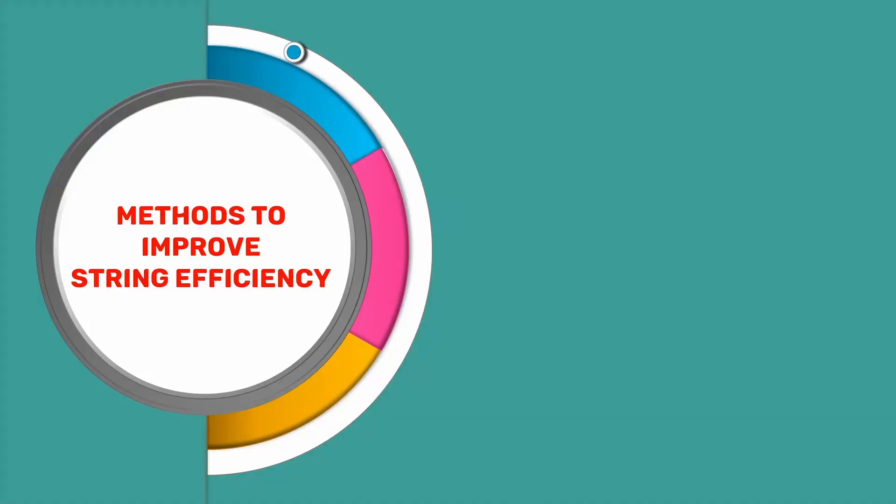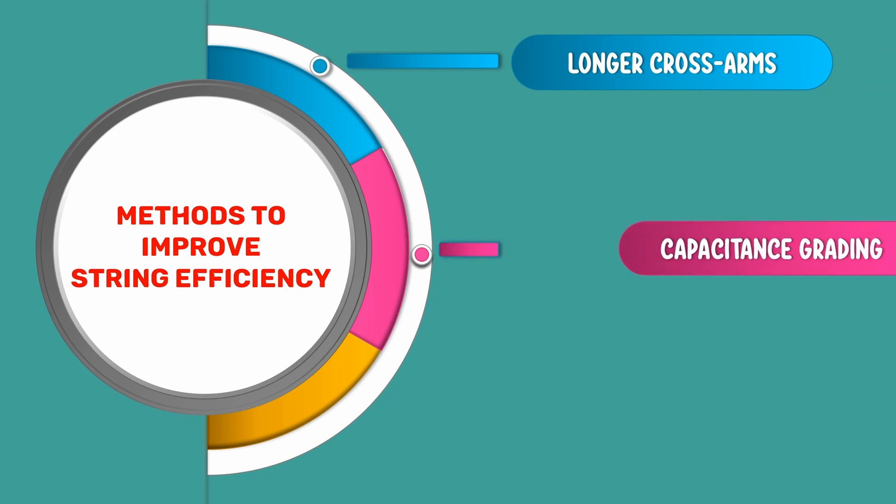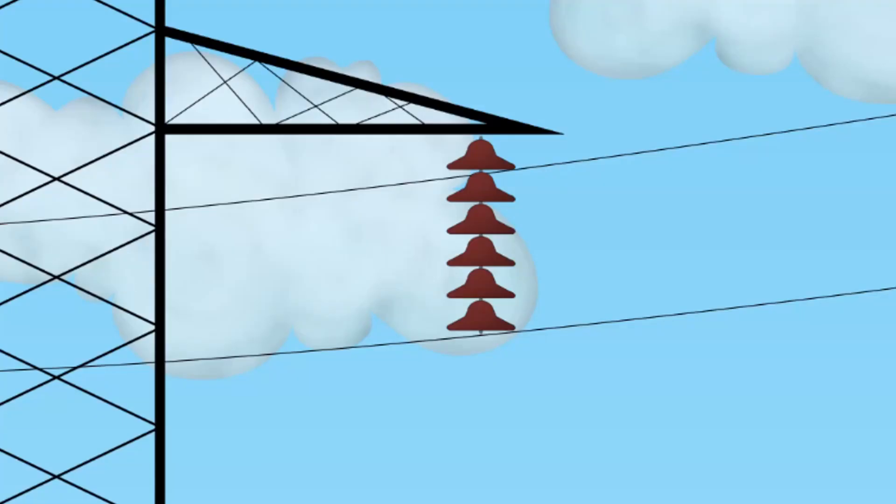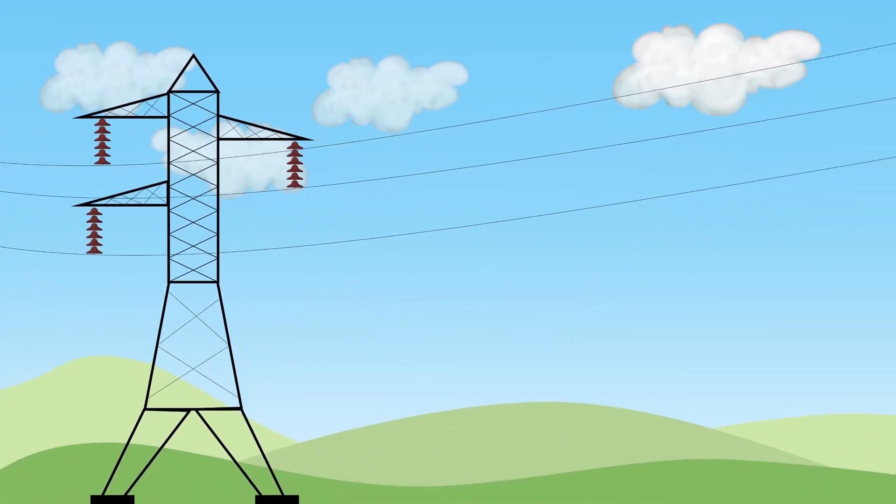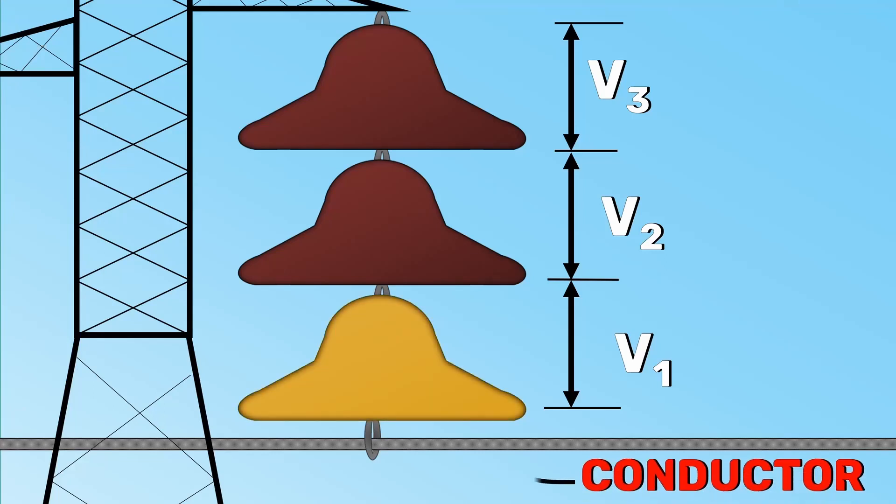This video is all about the methods to improve string efficiency. The voltage is not uniformly distributed across the discs of suspension insulators.